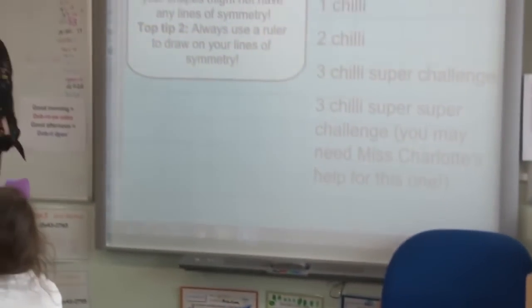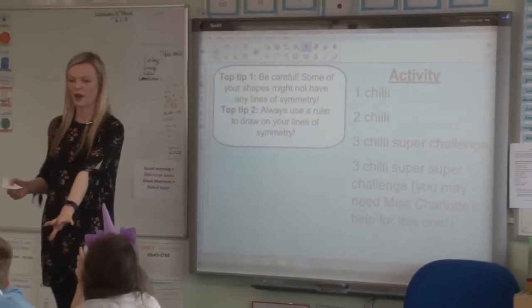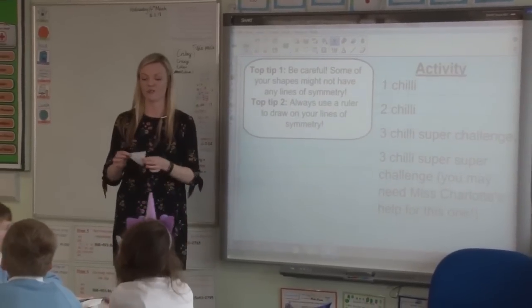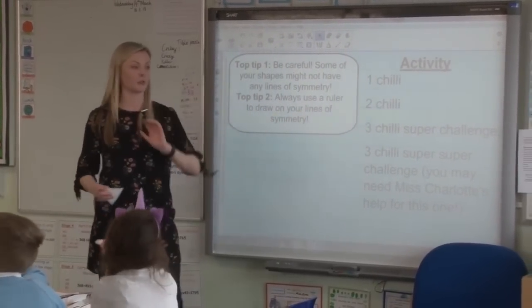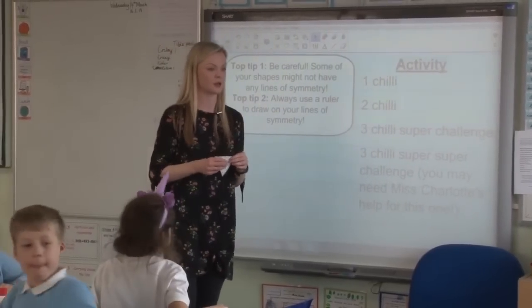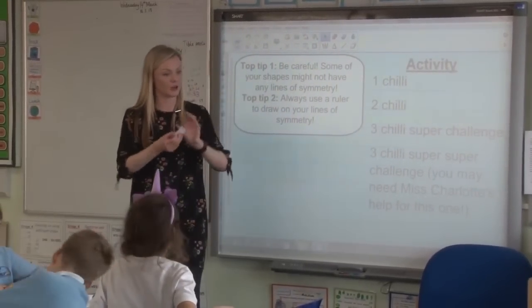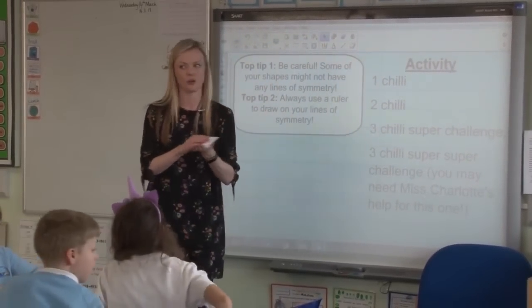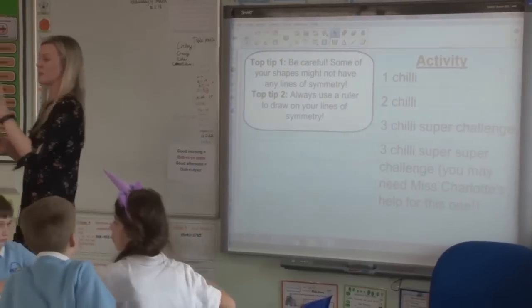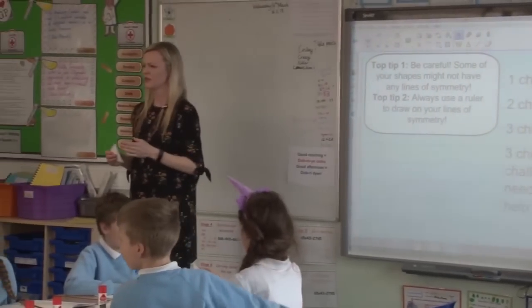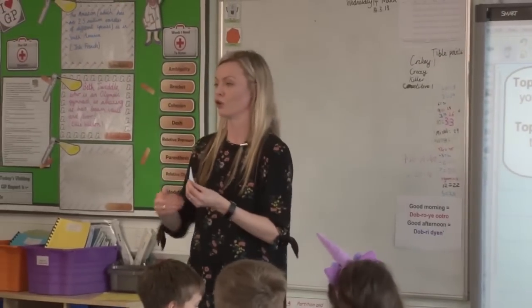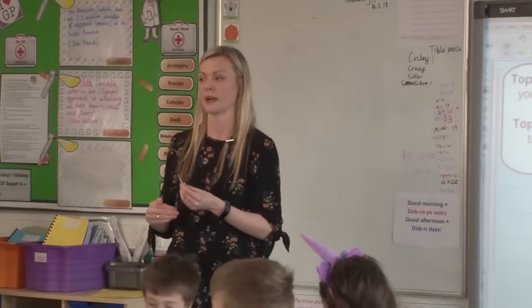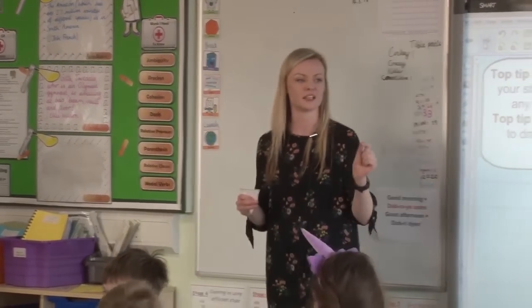Let me explain your activity. There are going to be lots of activities going on around the room. Middle table, you're going to be working with me to start with — we're going to be looking at more regular shapes, moving on to irregular. Group over here with Miss Charlotte, you're going to be working on some irregular shapes — folding them to see your lines of symmetry and sticking them in your book. Group over here, you're going to be working on some even trickier regular shapes. Maggie, just listen to this bit for a moment.